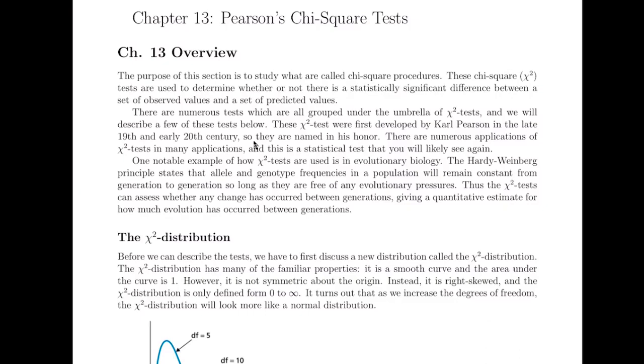So these chi-squared tests have lots of applications, in particular in biology and evolutionary biology. And basically, you want to know, if you were going to study some sort of variable where you can predict what's going to happen, what you can do is you can go and make observations and then compare the observations to your predictions and say, was this a good statistical model or not?